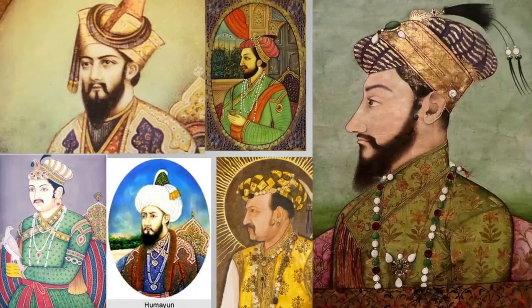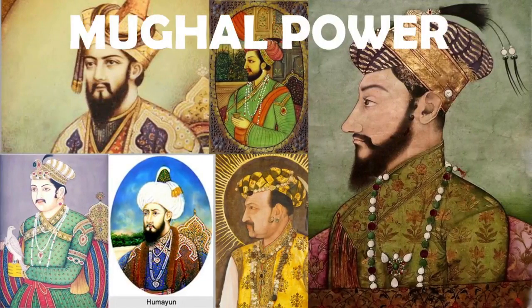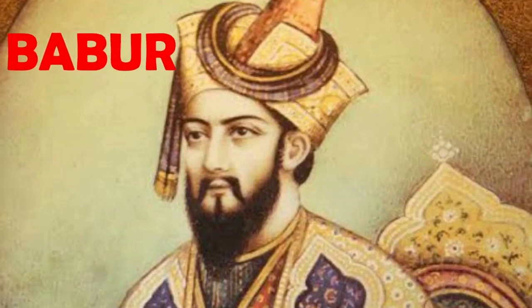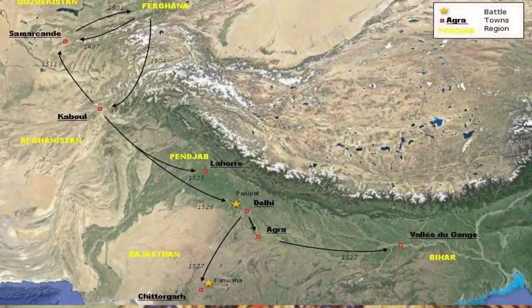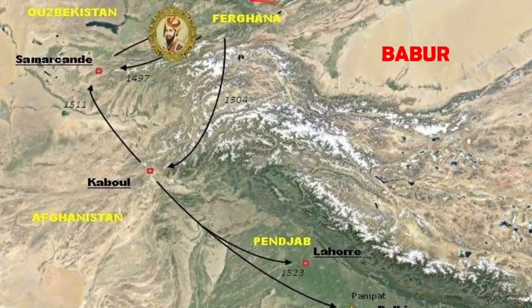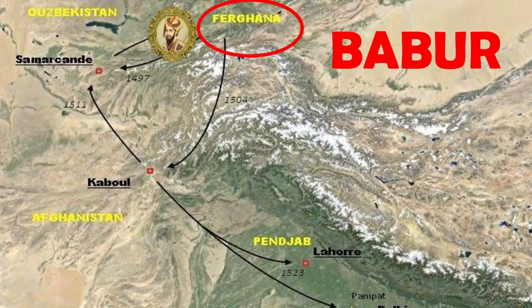Now let us study about Mughal power. In 1526 CE, the Sultanate of Delhi came to an end and Mughal power was established there. Babar was the founder of Mughal power. He was the king of Farghana in Central Asia, in today's Uzbekistan. He had heard of the wealth in India, so he planned an invasion of India.